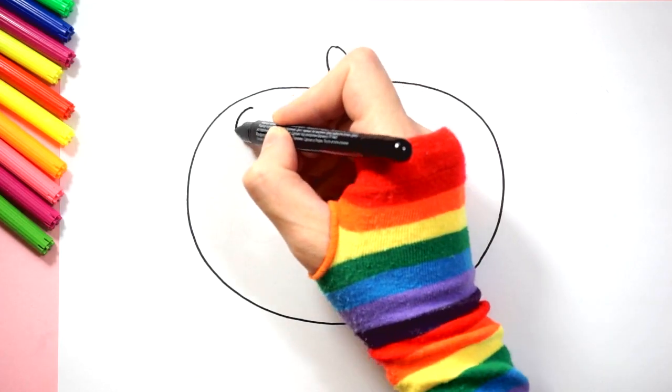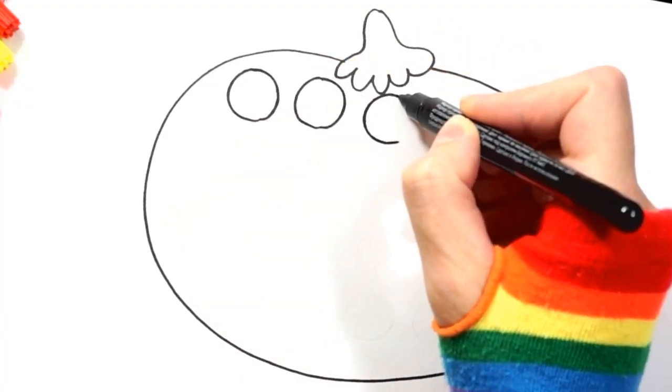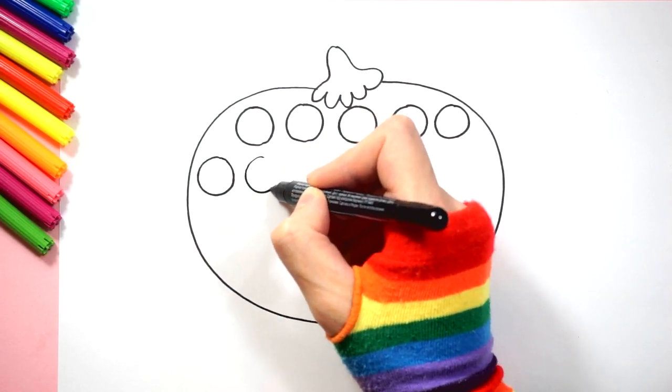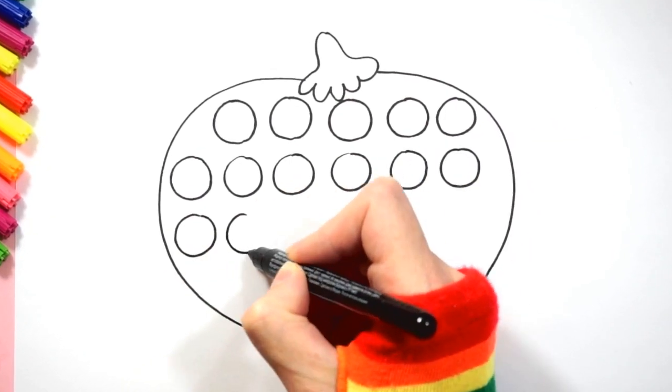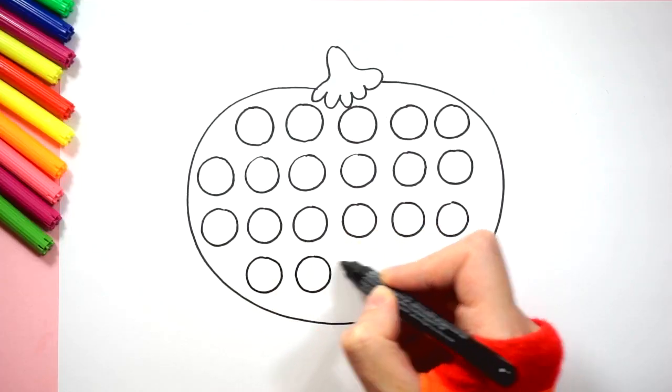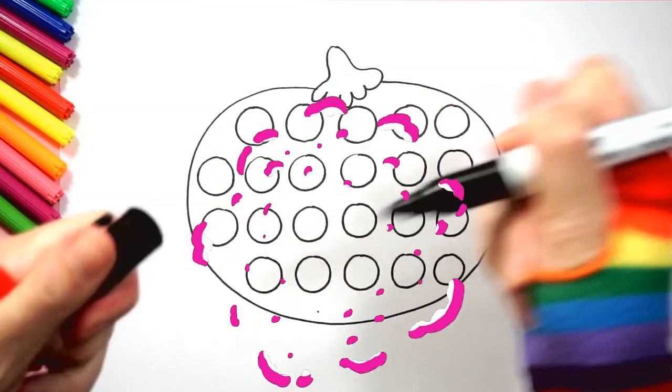Now we draw a lot of circles inside the contour. Let's count: three, four, five, six, seven, eight, nine, ten, eleven, twelve, thirteen, fourteen, fifteen, sixteen, seventeen, eighteen, nineteen, twenty, twenty-one, twenty-two. We take a thick marker and circle our picture.